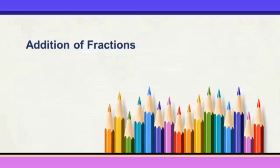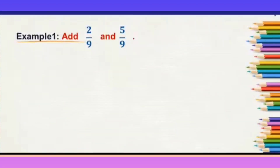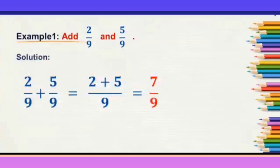Look at an example here. Add 2 by 9 and 5 by 9. When you observe these two fractions, the denominators are the same. When the denominators are same, it is called like fractions. So when the denominators are same, you will just add the numerators — that is 2 and 5 — and write the answer. So 2 plus 5 will be 7.